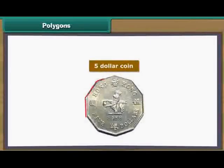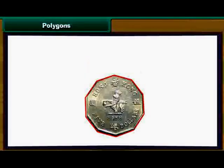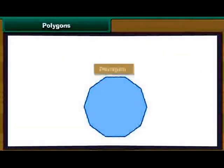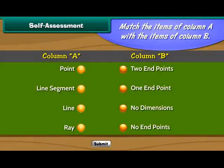Here is an old five-dollar coin from Hong Kong. It has ten sides. Self-assessment: Match the items of column A with the items of column B.